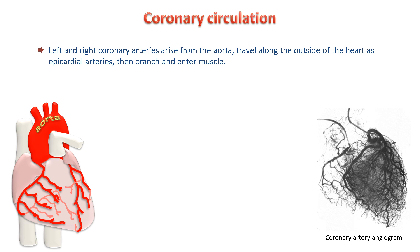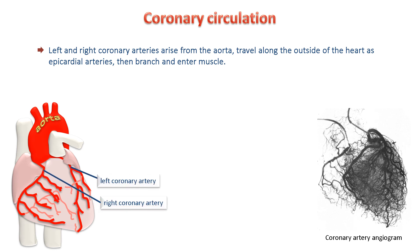The coronary arteries originate from the aorta as it enters the heart, and they transport blood from the aorta along the outside of the heart before branching into the muscle layers. The arteries running deep within the myocardium are referred to as subendocardial.